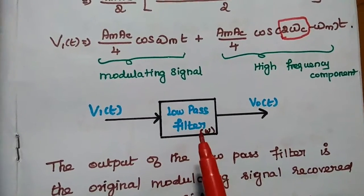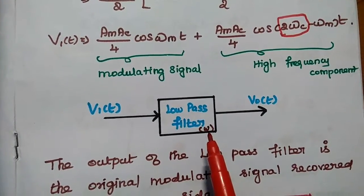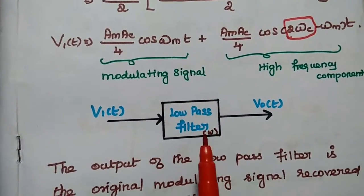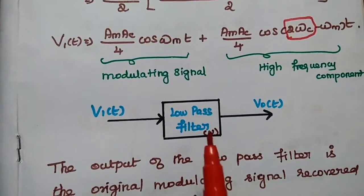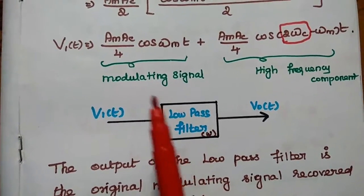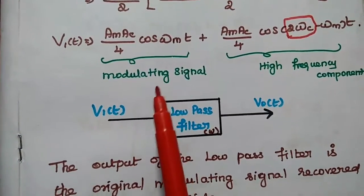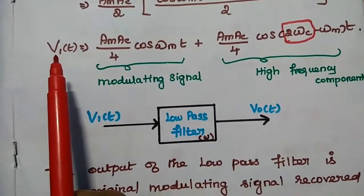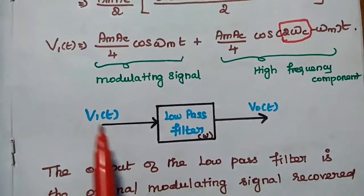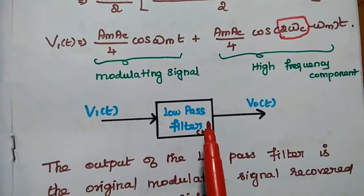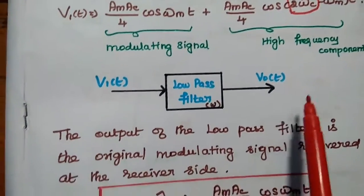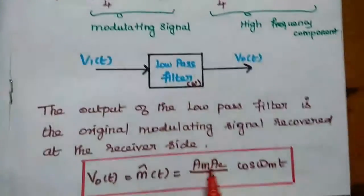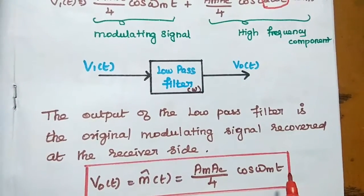The bandwidth of the low pass filter is W, which is equal to the modulating frequency. So it allows only the modulating signal, which is the original message or baseband signal. Giving V1(t) as input to the low pass filter, we get the output as (A_M · A_C / 4) · cos(ωM·t).